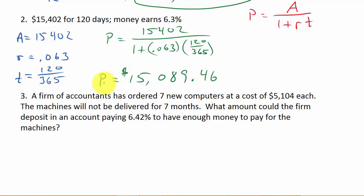Alright, so now let's look at the last problem. Alright, so it says a firm of accountants has ordered seven new computers at a cost of $5,104 each. The machines will not be delivered for seven months. What amount could the firm deposit in an account paying 6.42% to have enough money to pay for the machines? Okay, so in seven months they're going to get the computers, and evidently they don't have to pay until the computers come in. So they want to know how much can they put in that savings account right now to have the total amount, which would be seven times that. So how much do they have to put in there today? And that's present value.